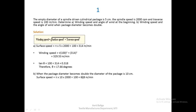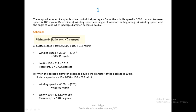The same calculations are repeated when the package diameter becomes double, i.e., 10 centimeters instead of 5. Surface speed is now 628 meters per minute. Winding speed is the square root of 100 squared plus 628 squared, giving 635.91 meters per minute. tan θ = traverse speed / surface speed = 0.159, so θ = 9.04 degrees.